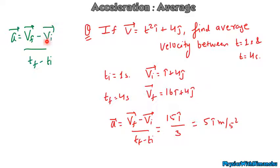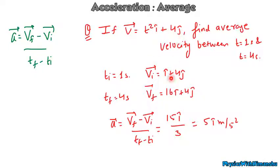Similarly, average acceleration is given by (final velocity − initial velocity) / (final time − initial time). If velocity is t²·i-cap plus 4·j-cap, find average acceleration between 1 second and 4 seconds. At t = 1s, velocity = i-cap plus 4·j-cap. At t = 4s, velocity = 16·i-cap plus 4·j-cap. Substituting all values, the average acceleration comes out to be 5·i-cap m/s². Please write down all these questions and formulas in your copy.